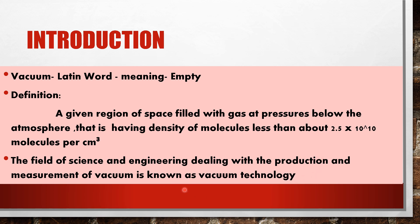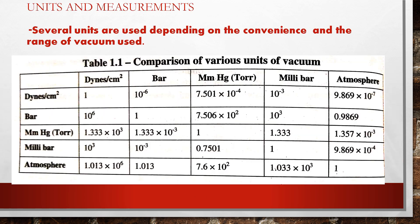Several units and measurements are used for the range of vacuum. These include dynes per centimeter squared, bar, millimeter of mercury (also known as Torr), millibar, and atmosphere. A comparison table of these various units is presented.